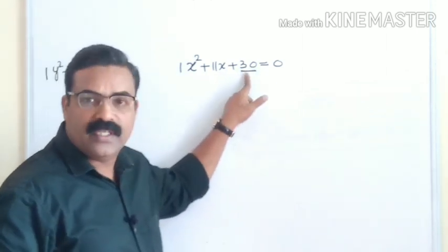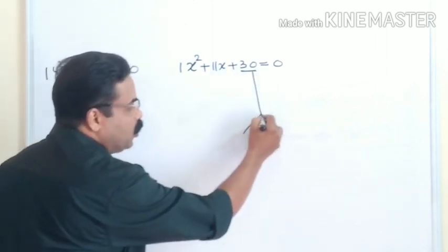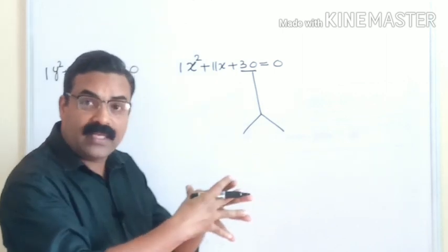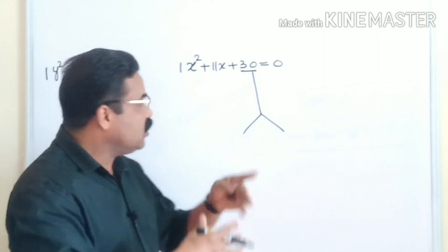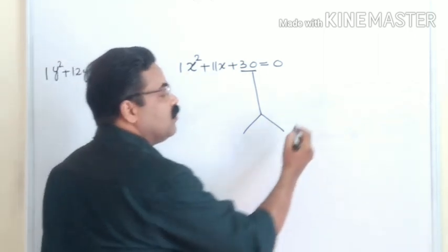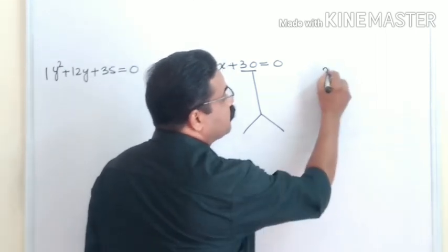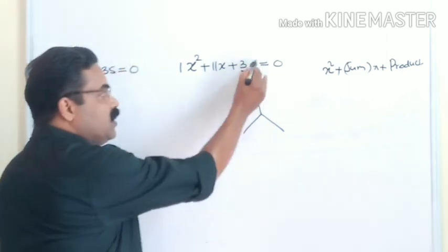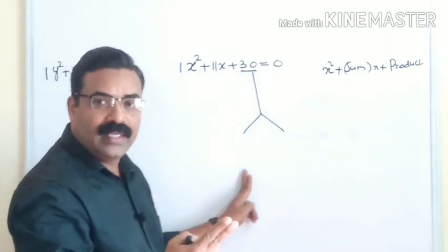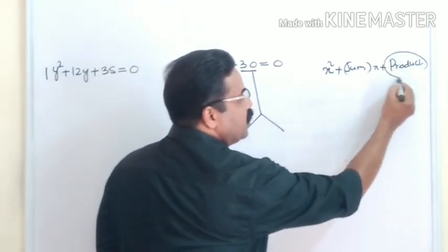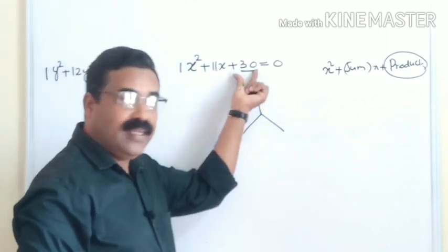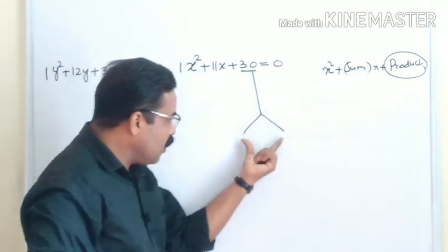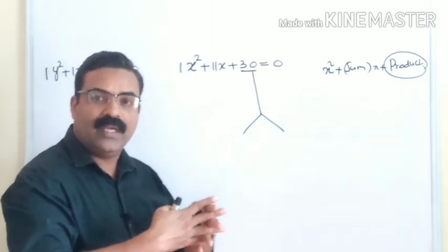First confirm that the coefficient of x² is 1. If it is 1, look at the last term. The last term here is 30. You have to split 30 into two numbers such that when you multiply those numbers you get 30, and when you add those numbers you get 11 — because the middle term is the sum of the two values of x.